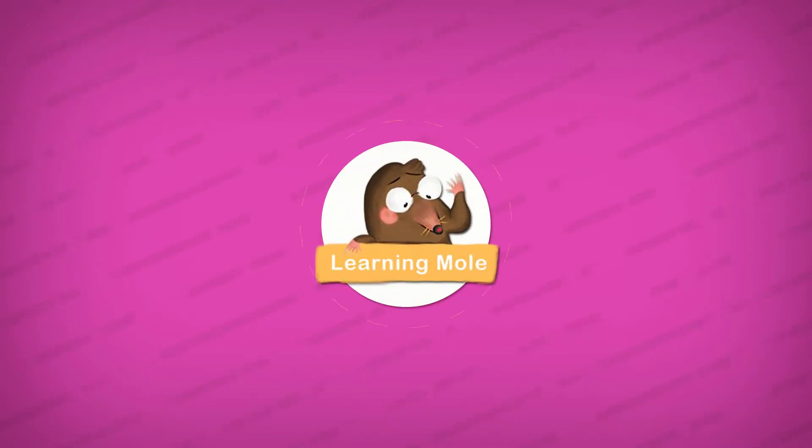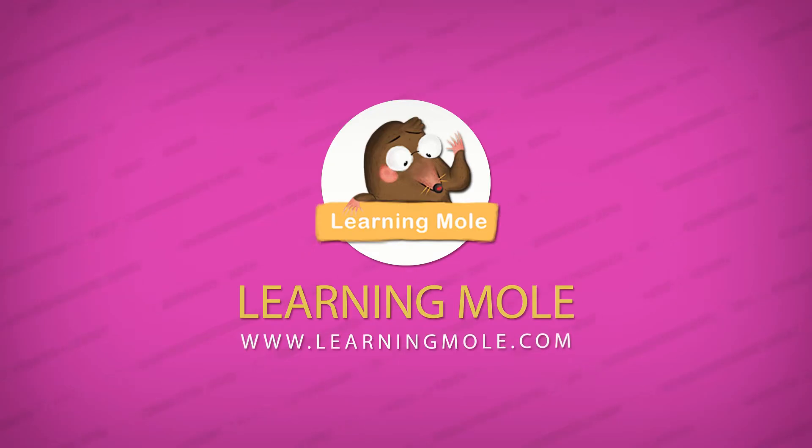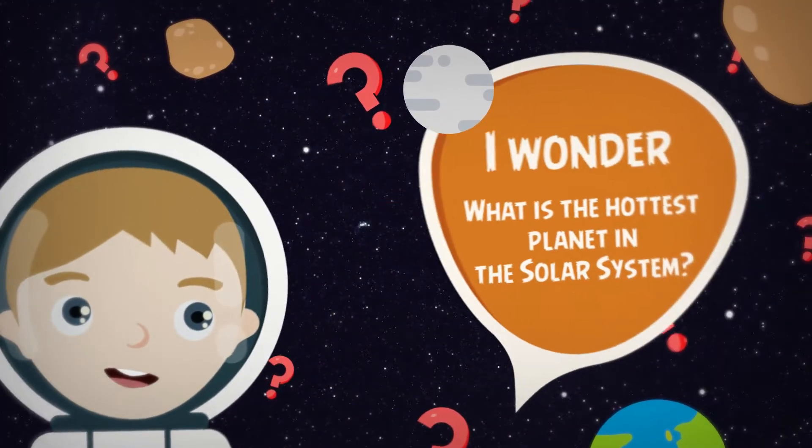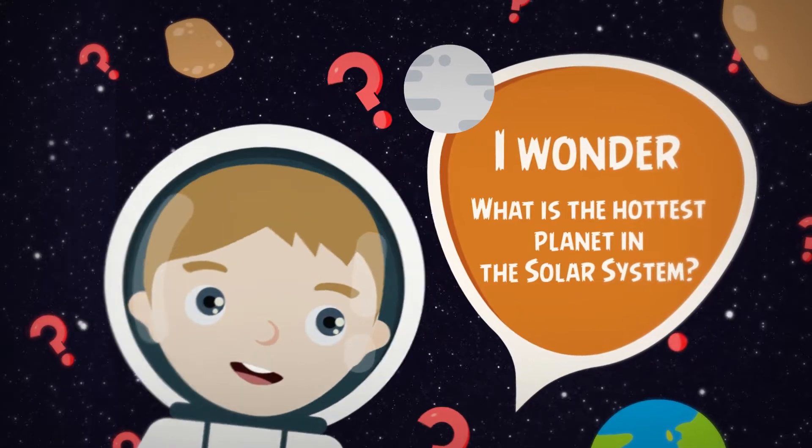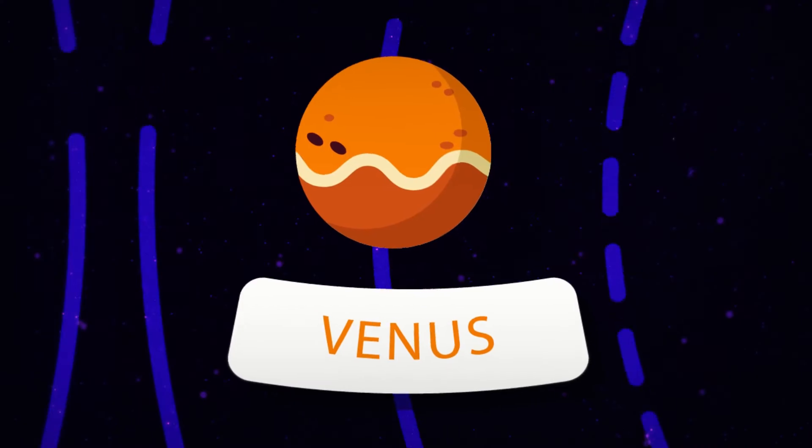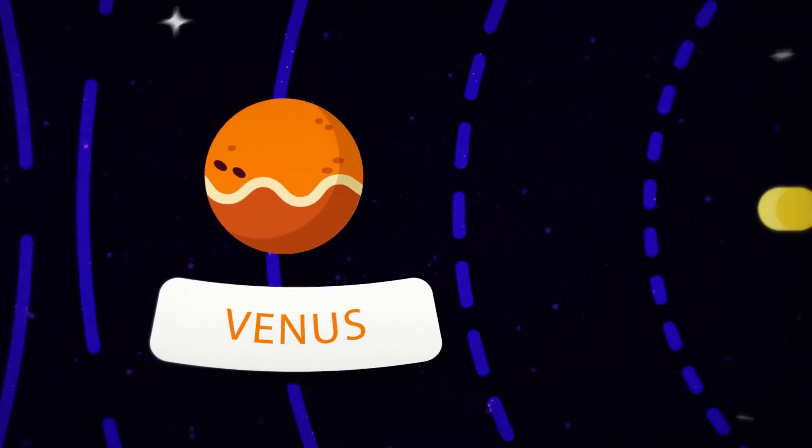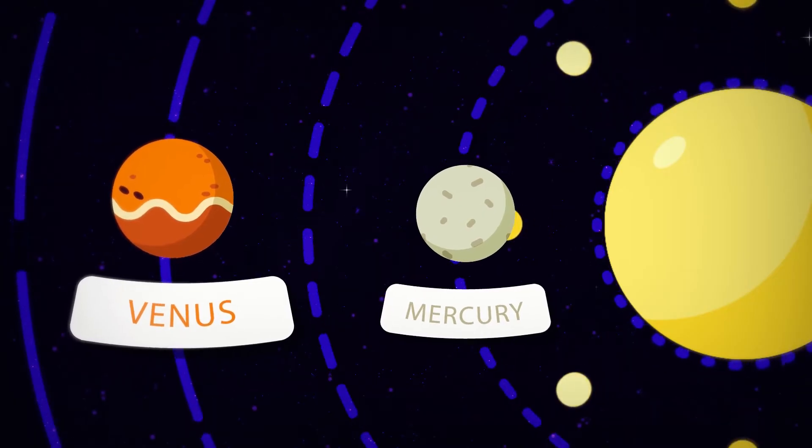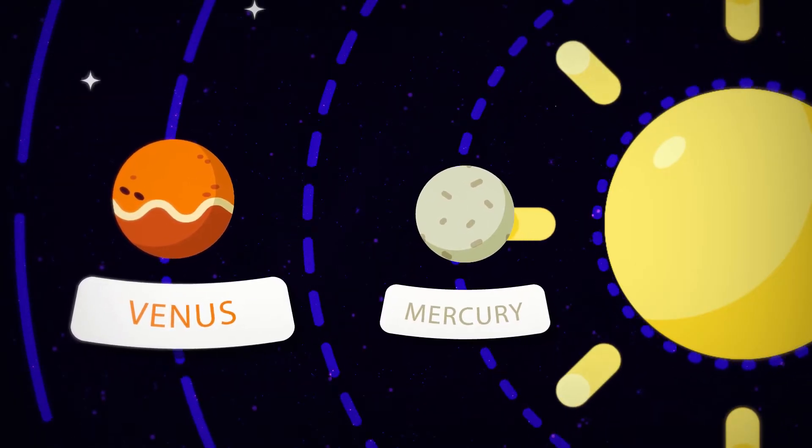Welcome to Learning More. I wonder, what is the hottest planet in the solar system? Venus is the hottest planet, even though Mercury is the closest planet to the Sun.